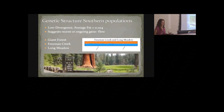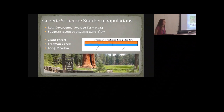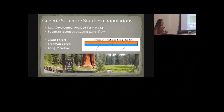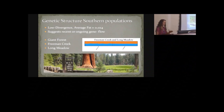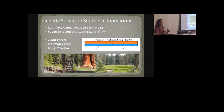In the southern part of the range, where you have the majority of populations and individuals, you get a completely different story — low divergence between populations. The Structure graphs show individuals assigned about 50% to either population, showing these are really connected by gene flow. For perspective, Freeman Creek and Long Meadow are 20 kilometers apart, but there are many groves in between. We think gene flow occurs in a stepwise fashion where populations are connected to adjacent populations, which connects them to the next, keeping the southern range genetically cohesive.